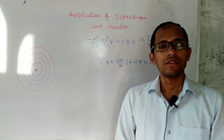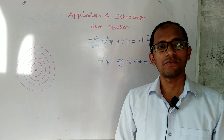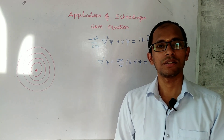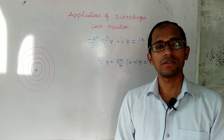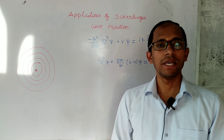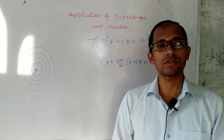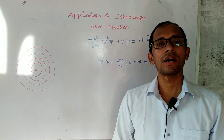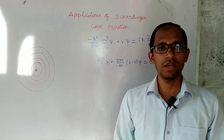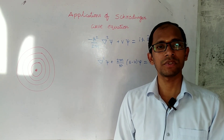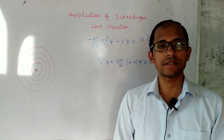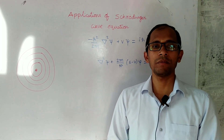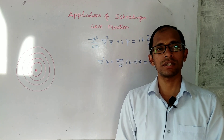Hi guys. So in the part of the physics syllabus — quantum mechanics and related theory video lectures — in the previous lectures, we made the basic difference between classical mechanics and quantum mechanics, that was the introduction to quantum mechanics. After that, we discussed matter waves — De Broglie's matter waves. After that, we discussed the wave function, its physical significance, then the Heisenberg uncertainty principle, and then Schrödinger's time-independent and time-dependent wave equations. These things we discussed in the previous lectures.